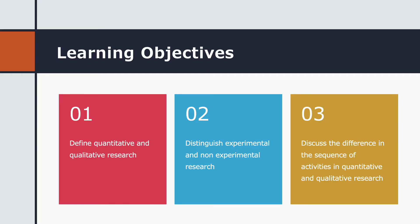I will cover three learning objectives for today. Number one, we will define quantitative and qualitative research. We will distinguish experimental and non-experimental research, and we will discuss the differences in the sequence of activities in quantitative and qualitative research.